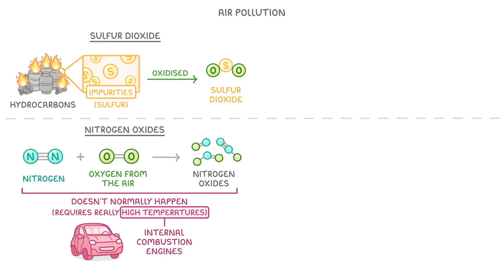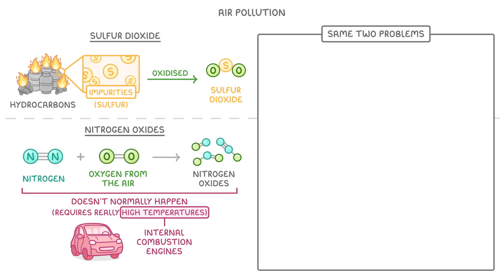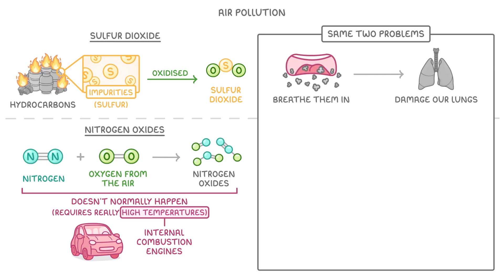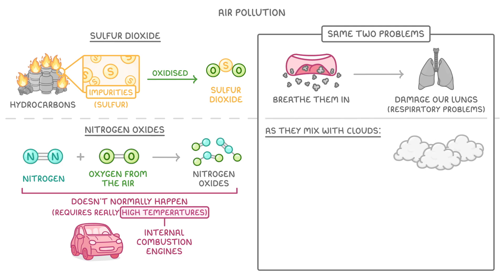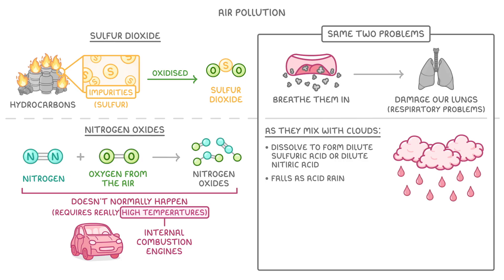Both of these types of pollutants have the same two problems. One is that, just like particulates, when we breathe them in, they can damage our lungs and cause respiratory problems. The bigger problem though is that as these gases mix with clouds, they dissolve to form dilute sulfuric acid or dilute nitric acid, which then falls as acid rain.